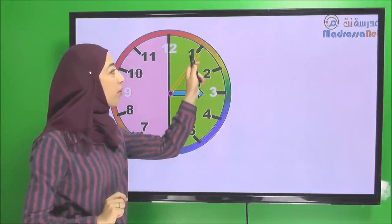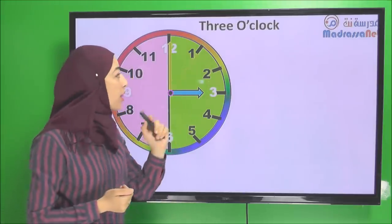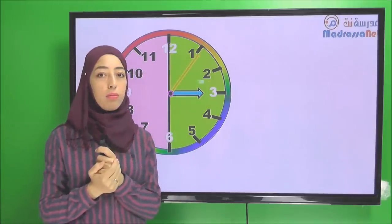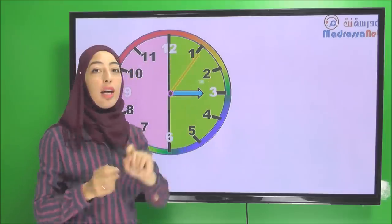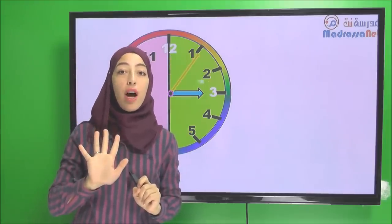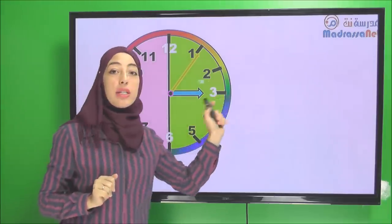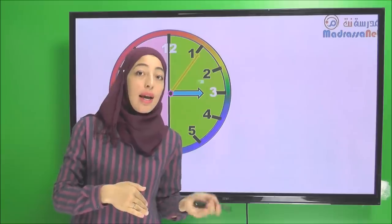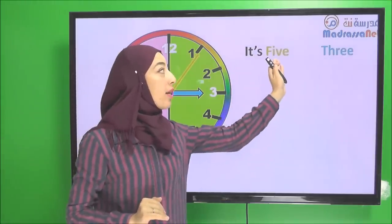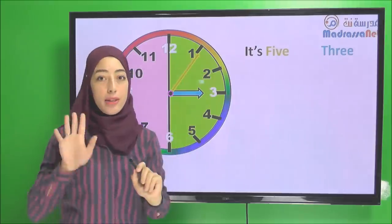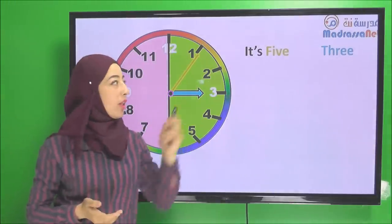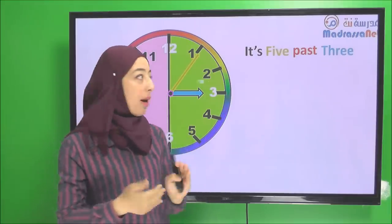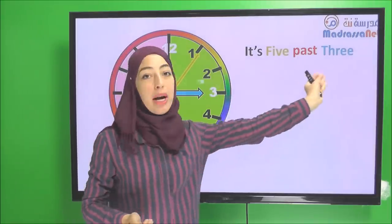It was three o'clock. Now the minutes have moved by five minutes. The hour is three. So five minutes have passed three. It's not 'five three' — we say it's five past three. Five minutes past three. It's five past three. What about now? Here it's ten past three — ten minutes have passed three.